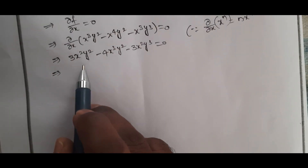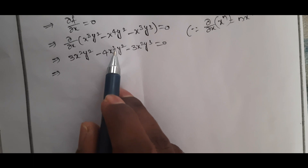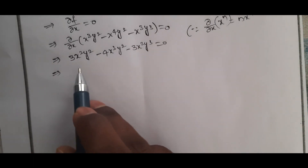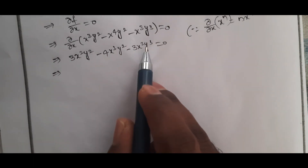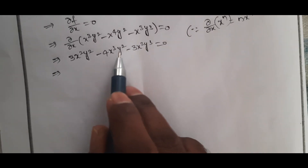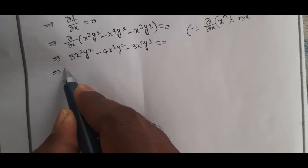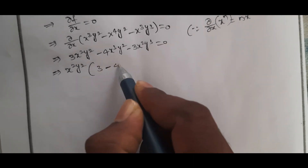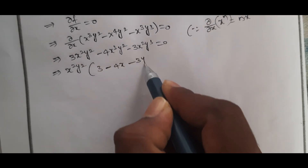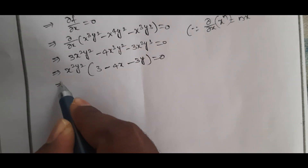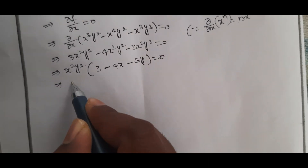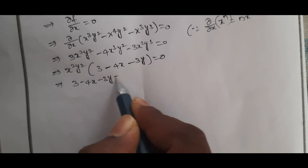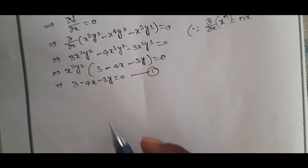Taking common factors: x² is common, and y² is common. Factoring these out, we get the expression inside the bracket as: 3 - 4x - 3y = 0. This is equation number 1.